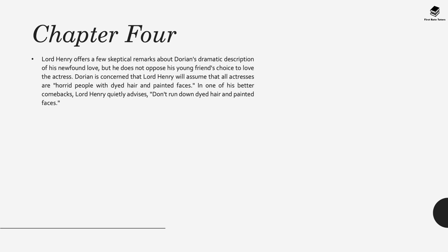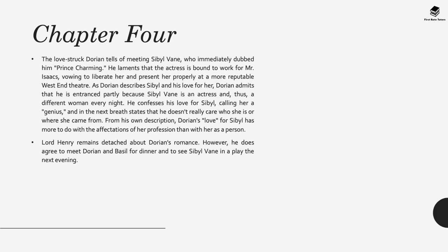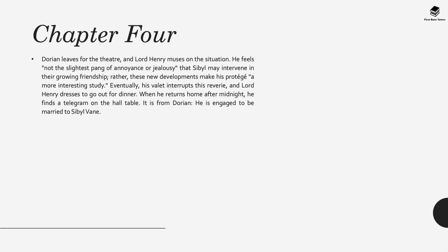Dorian is concerned that Lord Henry will assume all actresses are horrid people, and he invites him to go and watch Sybil perform. The love-struck Dorian continues talking about his meeting with Sybil Vane, who immediately dubbed him Prince Charming when he went backstage. Lord Henry observes Dorian's romance in a very detached way—he feels not the slightest pang of annoyance or jealousy that Sybil may intervene in their growing friendship, but rather these new developments make his protégé a more interesting study. At the end of this chapter, we also learn that Dorian has announced to Lord Henry via telegram that he is engaged to be married.